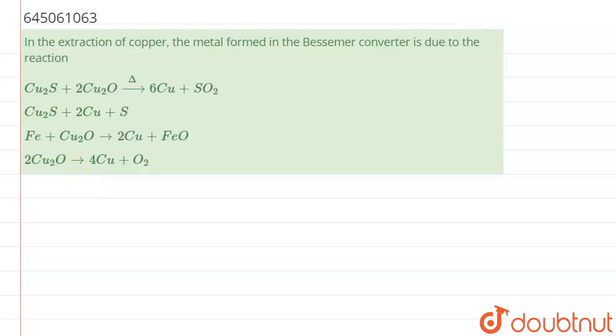Hello everyone, in this question we have been provided: In the extraction of copper, the metal formed in the Bessemer converter is due to the reaction. So let's start this question.